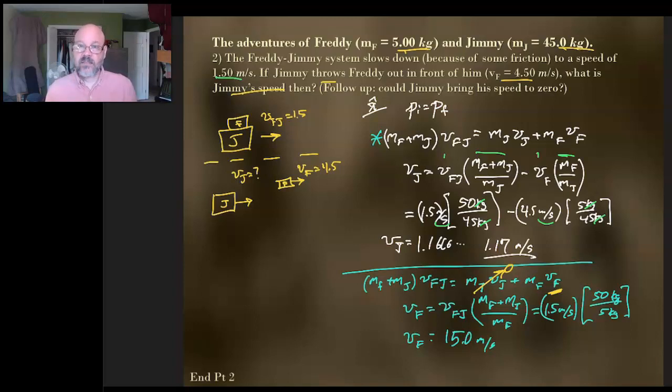Now if he could fling Freddy faster than that, if he did in 15.1 meters per second, then Jimmy would actually start to go backwards. And so you know, then you could sort of play different sorts of games. Well what if we wanted Jimmy to go backwards two meters per second? Well then okay, then you could run the numbers again, put in two here. And you know, put in whatever you want to get for your final number there, just like that.